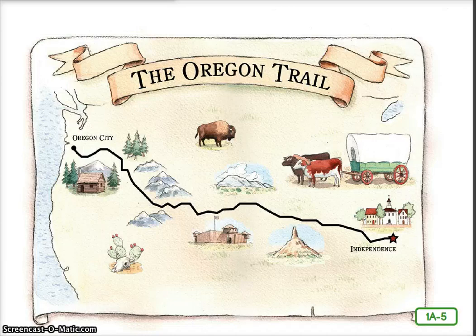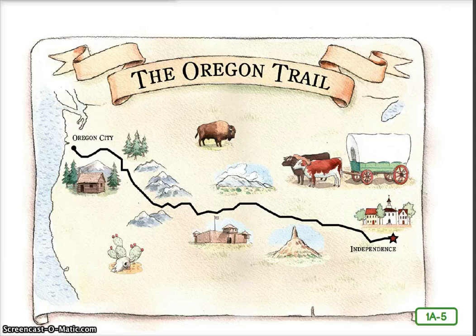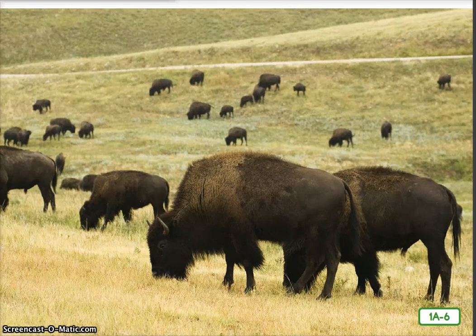A few days later, the Morgans turned onto the main road to Oregon, known as the Oregon Trail. There were many other settlers traveling on this road. The Morgans joined up with a group of more than 100 settlers traveling to Oregon. By mid-June, the wagon train was crossing the Great Plains. On all sides, they saw vast open fields of grass without a tree in sight. The Morgans also began to see large herds of buffalo, which spent much of their time with their heads bowed, grazing on the abundant grass.